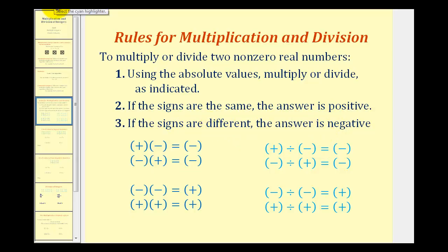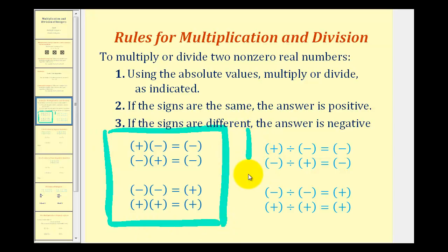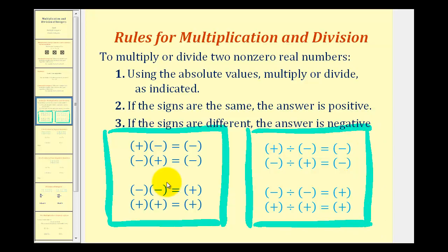But I think when you're first learning how to multiply and divide integers, these tables here are very helpful. Here's the one for multiplication, and here's the one for division. The good news is they're exactly the same except for the operation. The first two rows show multiplying or dividing two numbers with different signs — the product and quotient will always be negative. If we're multiplying or dividing two numbers with the same sign, both negative or both positive, the product or quotient will always be positive.